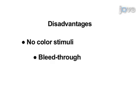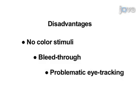The disadvantages include: each image can only contain shades of a single color, so no chromatic stimuli. The lenses are not perfect, so there will always be some bleed-through, and each eye will see some of the other eye's image. This creates a problem for claiming that the suppressed image was entirely unseen. Bleed-through can be reduced by using more than one filter, for example wearing two goggles one on top of the other. And finally, red-blue goggles do not work well with most current eye trackers.